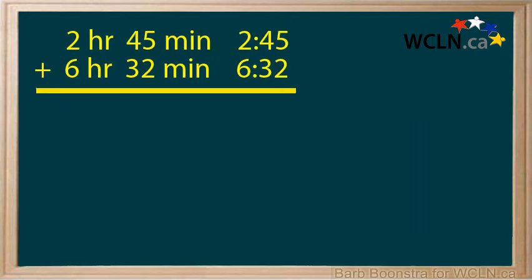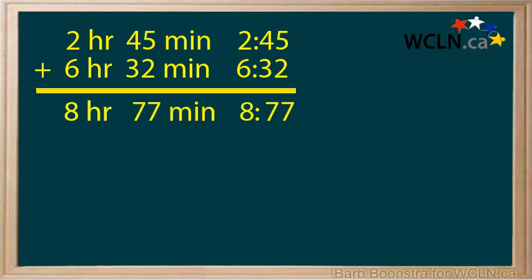Add 2 hours and 45 minutes and 6 hours and 32 minutes. The hours are added: 2 hours plus 6 hours is 8 hours. The minutes are added: 45 minutes plus 32 minutes is 77 minutes.